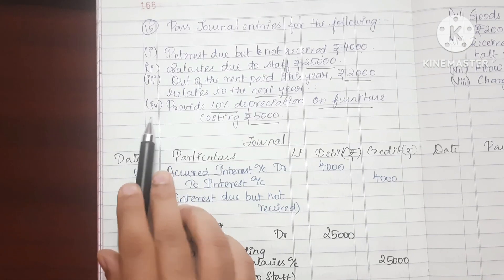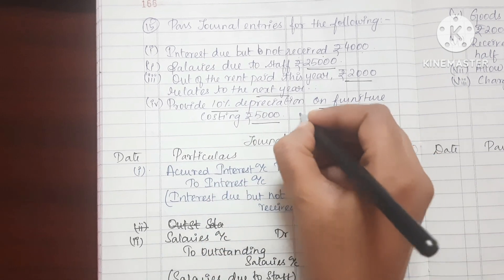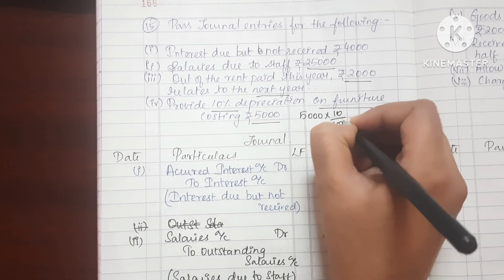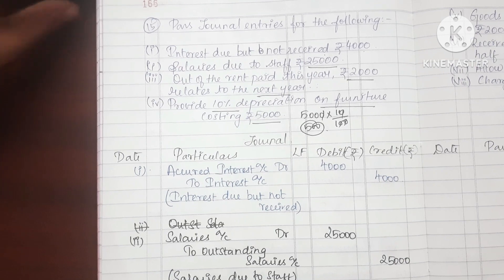Fourth sub-division: Provide 10% depreciation on furniture costing Rs.5000. 5000 times 10% charged 500. Depreciation entry.